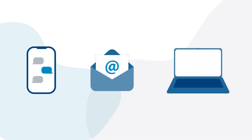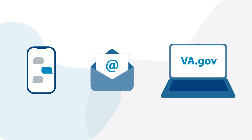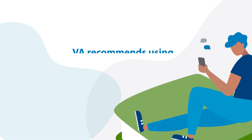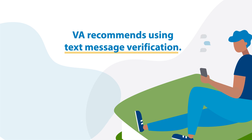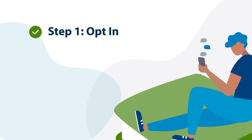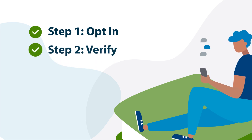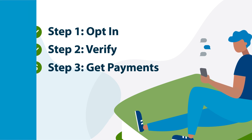There are three methods to verify your enrollment — text, email, and online. VA recommends using text message verification, which allows you to verify your enrollment in three quick steps. Simply opt-in to text messages, verify your enrollment at the end of each month, and continue to get your MHA and/or kicker payments as usual.